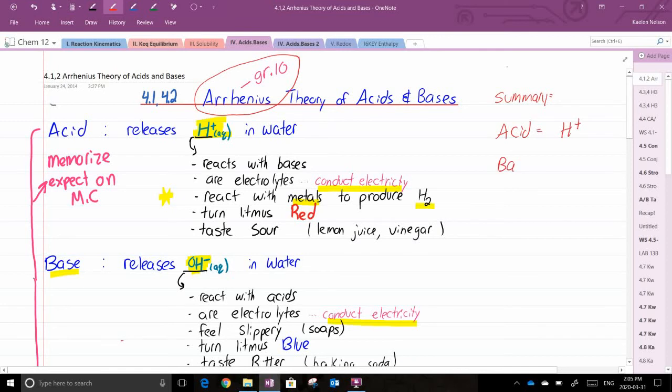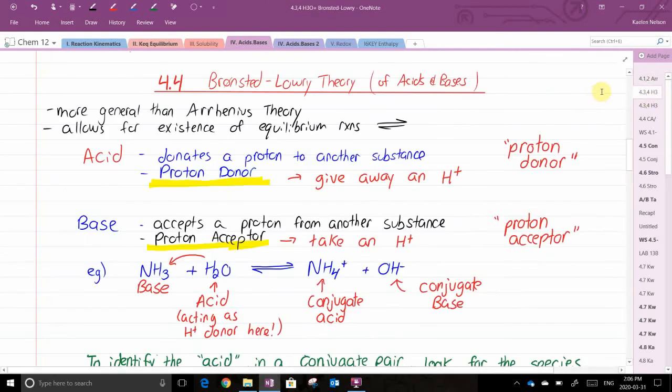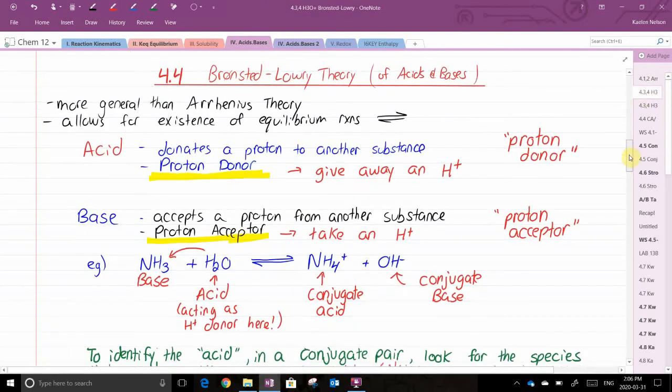And if you're looking for a base, you are going to look for OH-. In the Arrhenius theory, all bases are OH-. So all Arrhenius bases have an OH- in them. The main difference for Arrhenius and Bronsted-Lowry is that Bronsted-Lowry bases do not have an OH-.